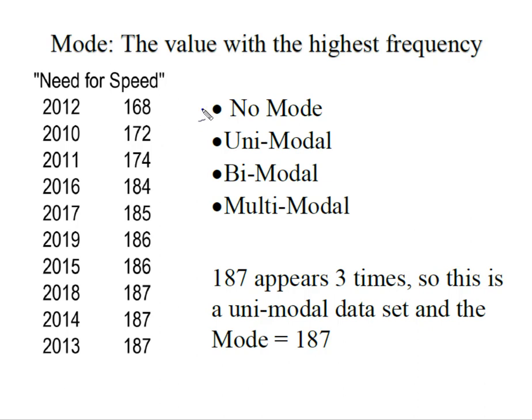We could have no mode. I always think that should be no modal, but it's no mode. In other words, every value is unique and no value repeats itself. Our data set can be unimodal, meaning there is only one mode, which means there's one value that appears more often than all the others. We could have a bimodal data set, which would mean that there are two modes. And that means that you have two values that repeat the same number of times, and they are the two values that appear most often.